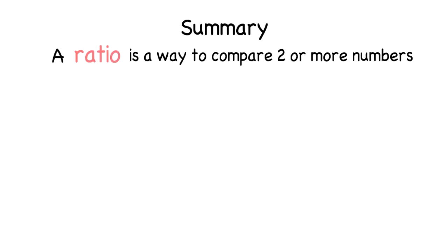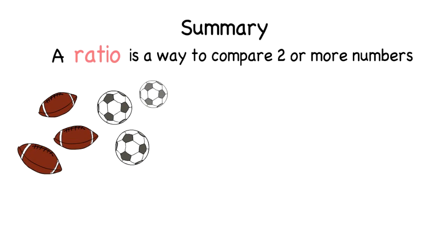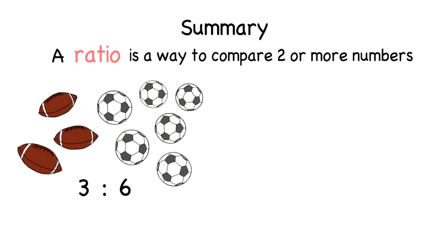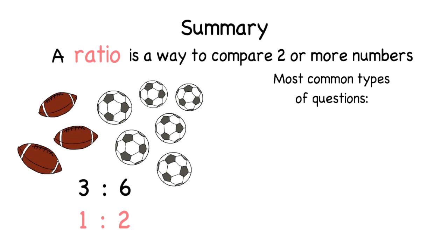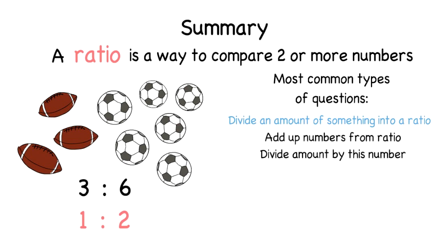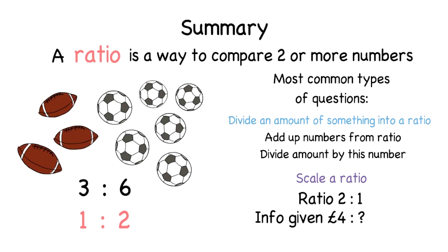In summary, a ratio is just a way to compare two or more numbers, and they need to be written in their simplest form — for example, three rugby balls and six footballs gives a ratio of one to two. The two most common question types are: first, dividing an amount into a ratio, where you add up the ratio numbers and divide the amount by that total; and second, scaling a ratio, where you set out information in a table and apply the same multiplier to both sides.